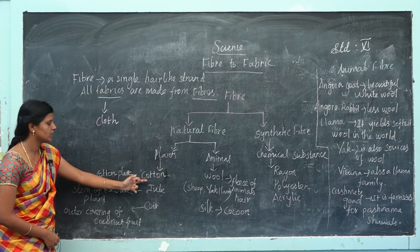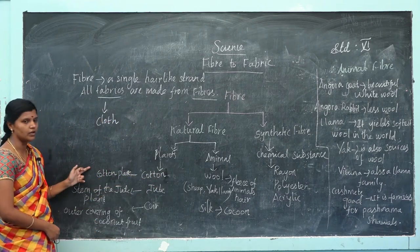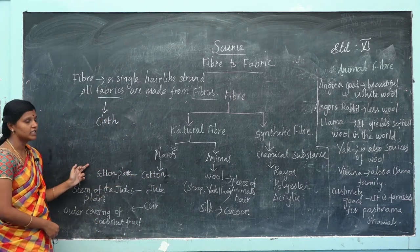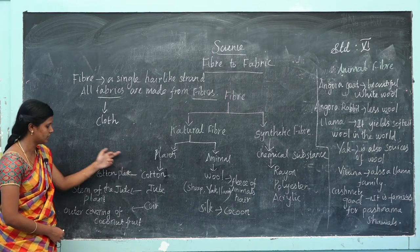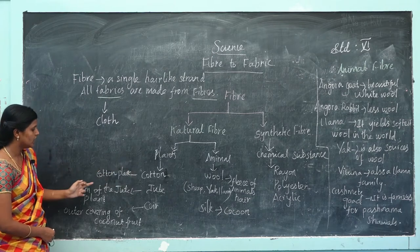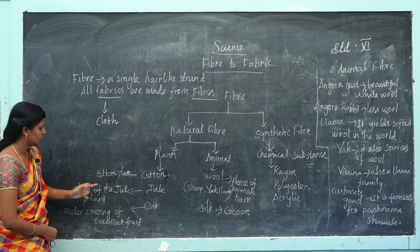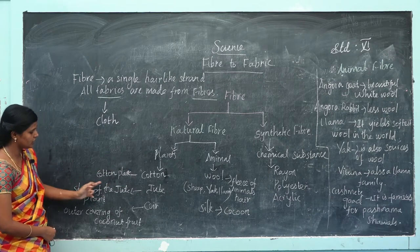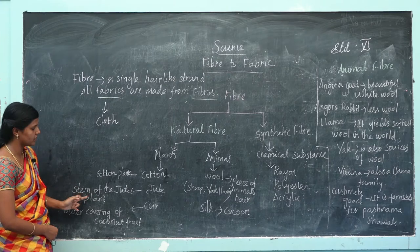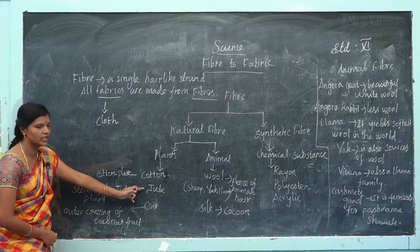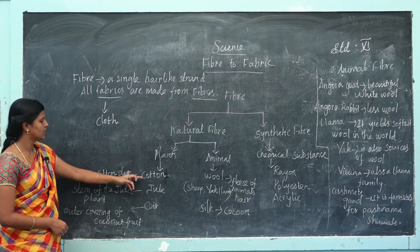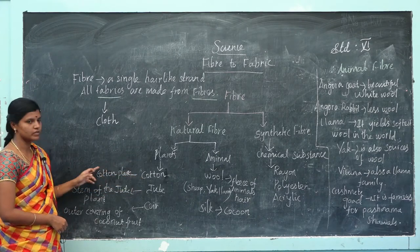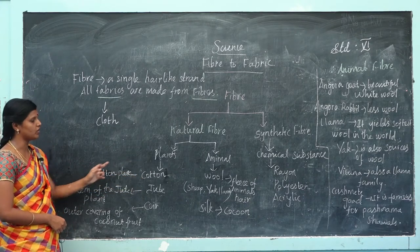Cotton is obtained from the cotton plant. Jute — the stem of the jute plant is the source of jute. First, we see about cotton: cotton is obtained from the cotton plant.